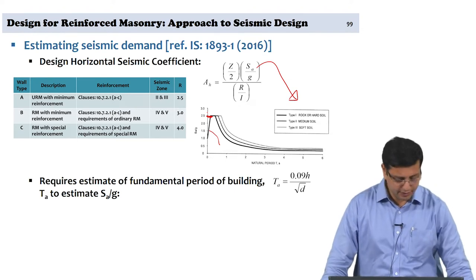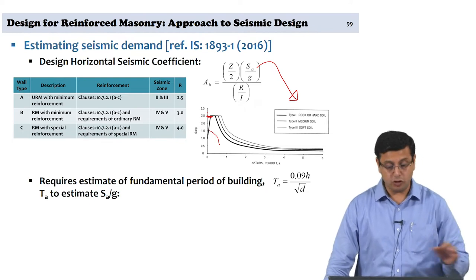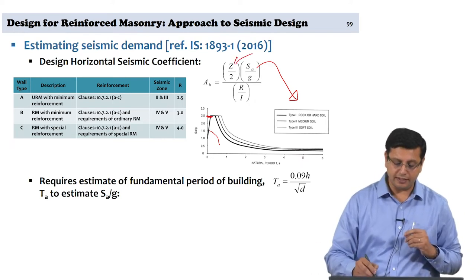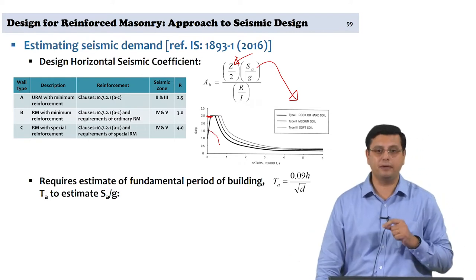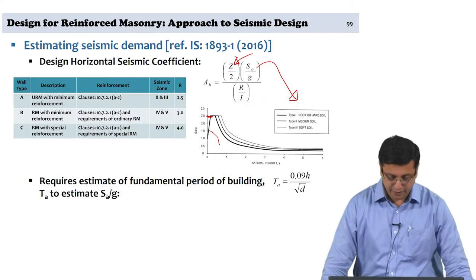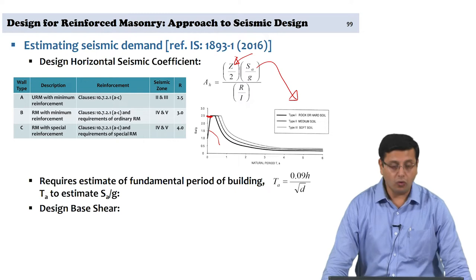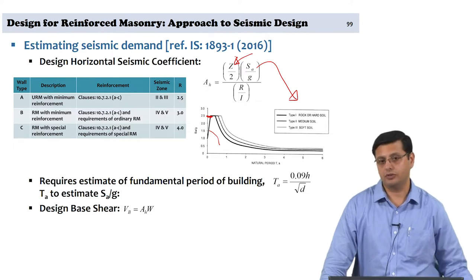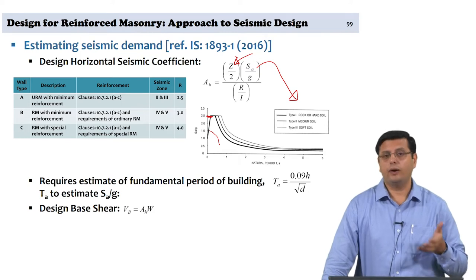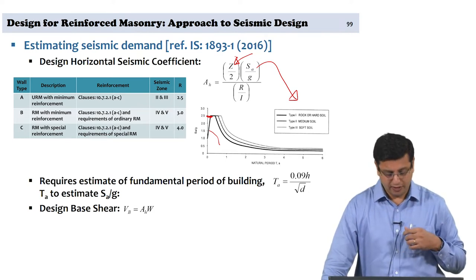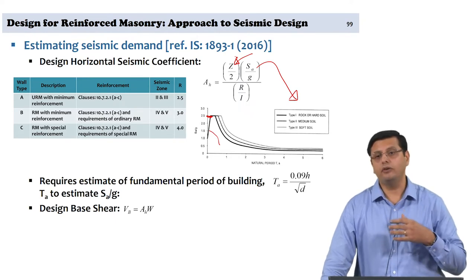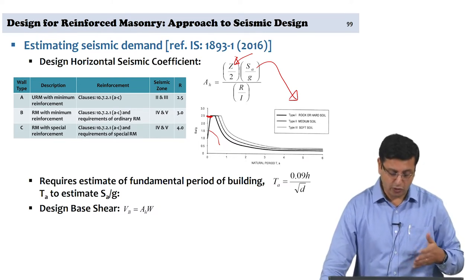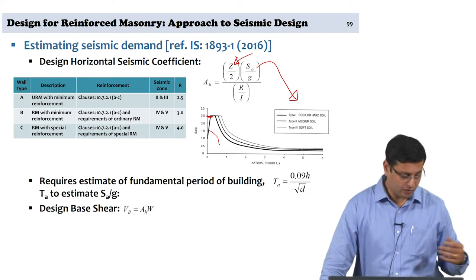Once AH is determined — assuming the design basis earthquake where Z is divided by 2, Z being defined for the maximum considered earthquake — you estimate the design base shear VB for the total building, which requires the seismic weight W. Seismic weight accounts for a percentage of live load depending on imposed load levels, and should include heavy snow or sand loads in affected regions.